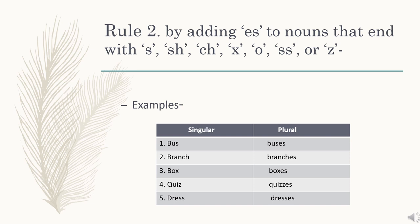Rule number 2: by adding es to nouns that end with s, sh, ch, x, o, ss or z. According to this rule, those nouns which end with s, sh, ch, x, o, ss or z — we just have to add es at the end of those words to make their plural form. For examples: bus becomes buses, branch becomes branches, box becomes boxes, quiz becomes quizzes, dress becomes dresses.